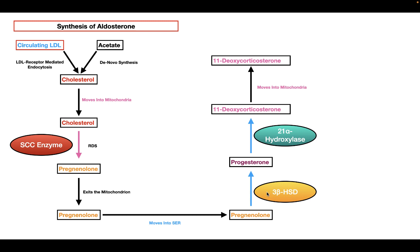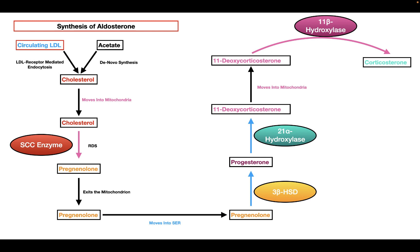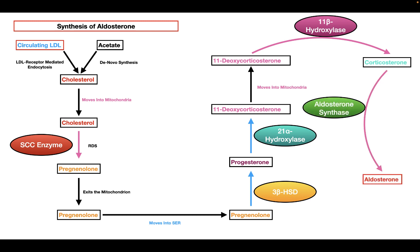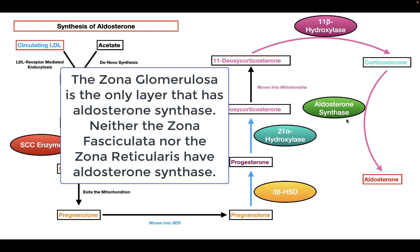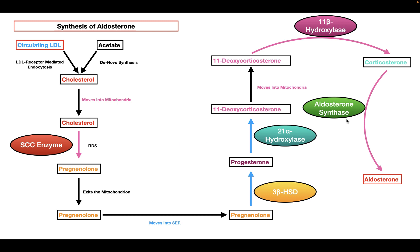The next enzyme this molecule encounters in the mitochondria is 11-beta-hydroxylase, which converts 11-deoxycorticosterone into corticosterone. The corticosterone is then converted into aldosterone by aldosterone synthase. This is basically how aldosterone is formed in the zona glomerulosa. After aldosterone is formed, it moves out of the cell and into the bloodstream.